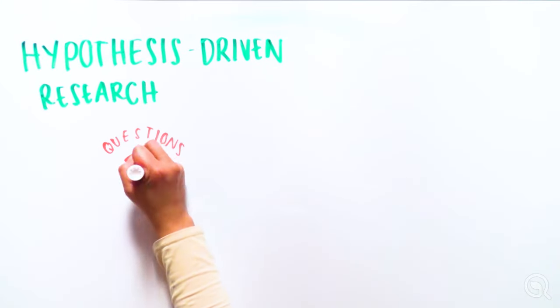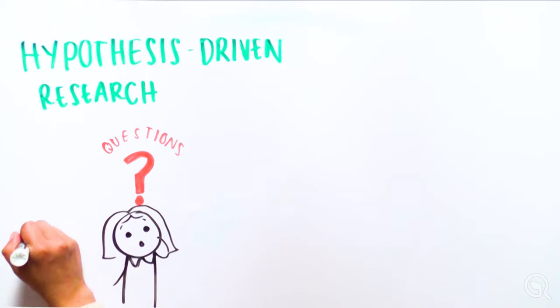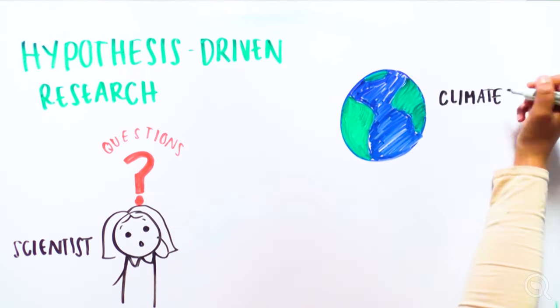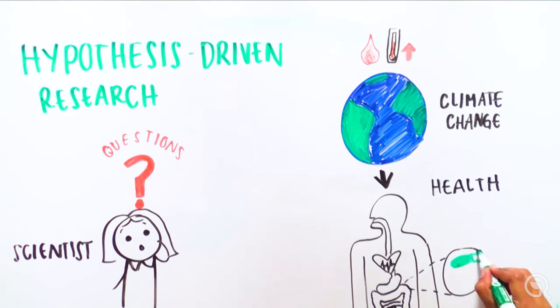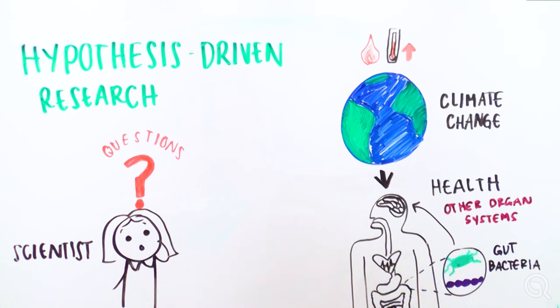Hypothesis-driven research helps answer scientific questions so we can understand the natural world around us. Scientists make a living out of answering questions, like how does climate change impact health, or how do gut bacteria affect our organ systems in our body? But the process is a bit more nuanced than you might think. Let's take a closer look with an example.